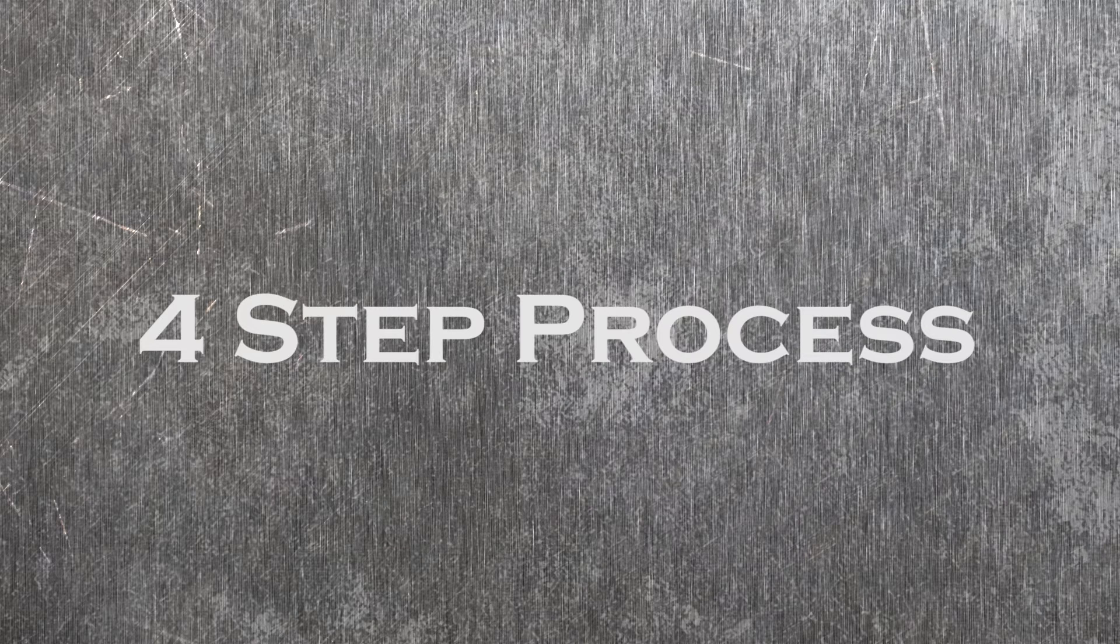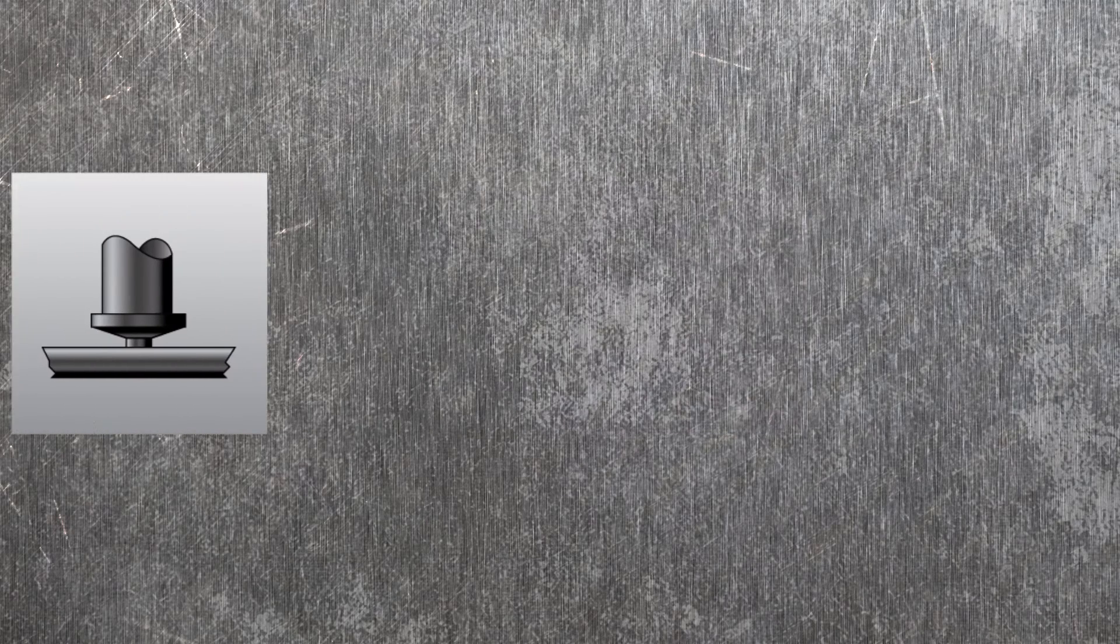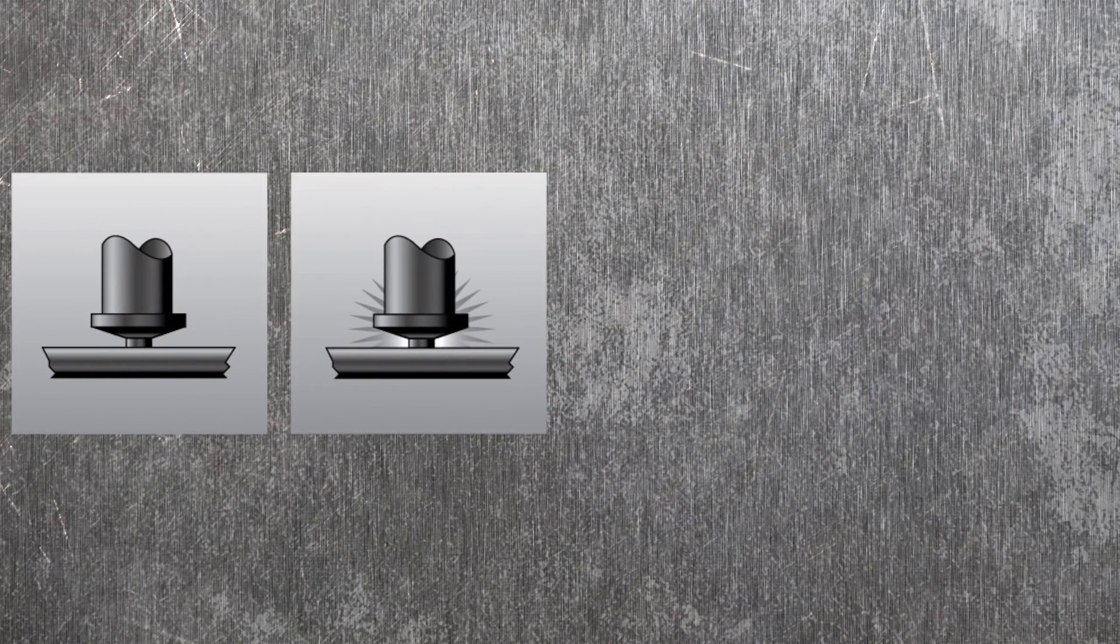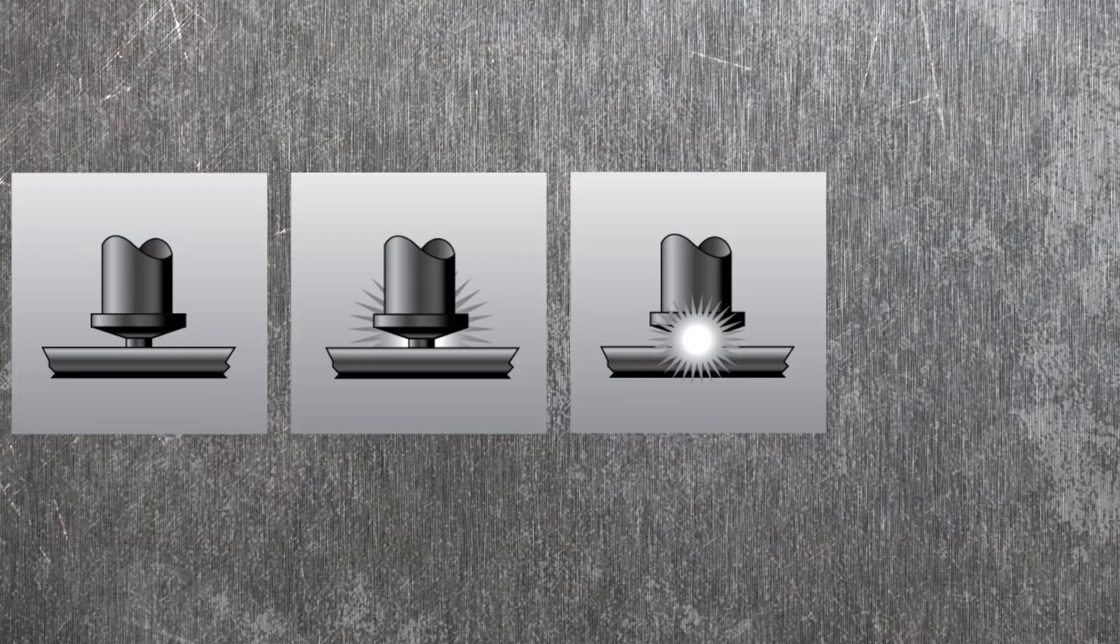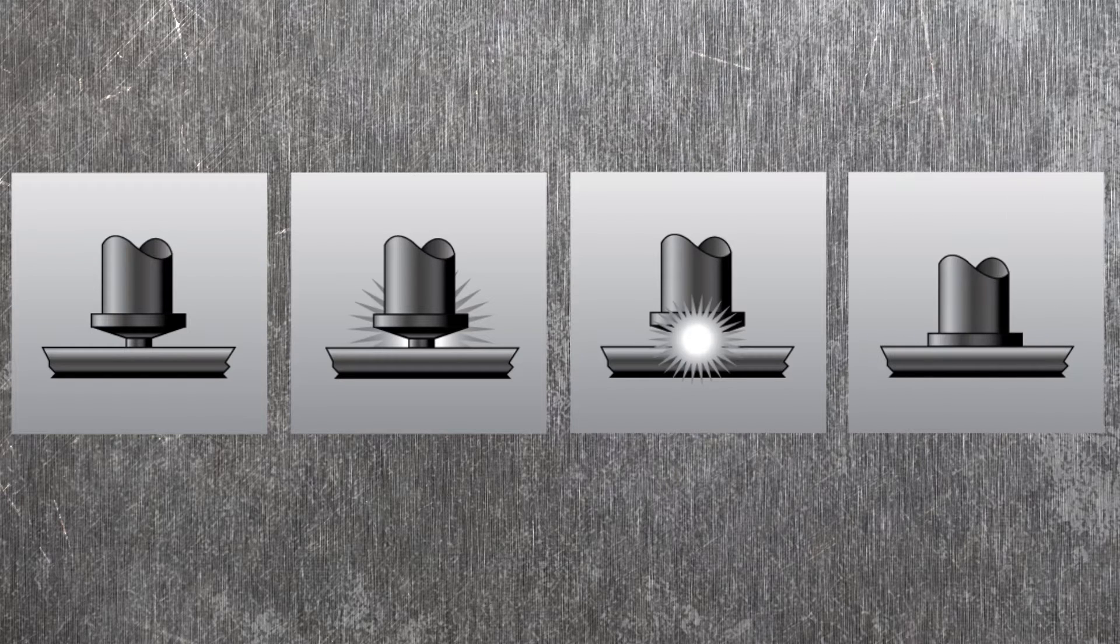The process of capacitor discharge welding occurs in a series of four instant steps: contact, ignition, placement of the stud or pin, and completion of the pin weld.